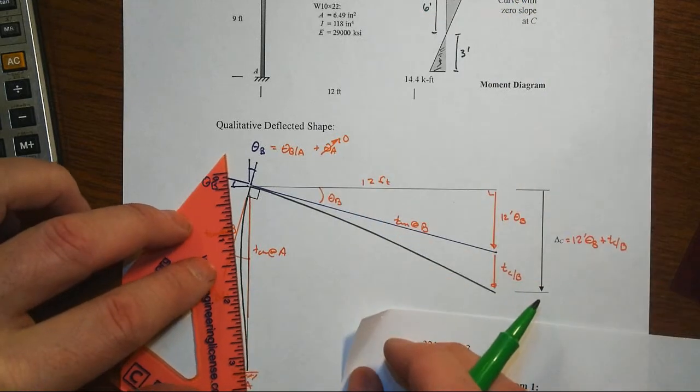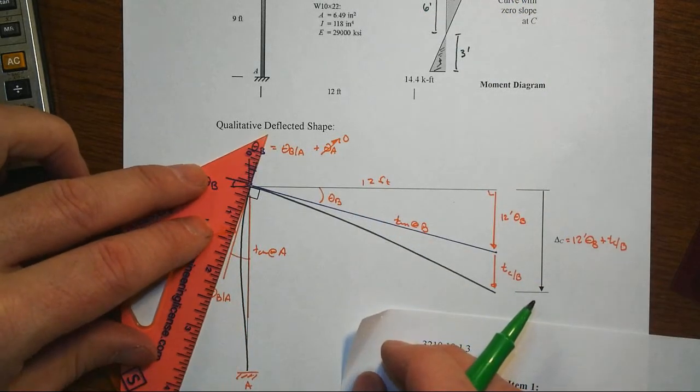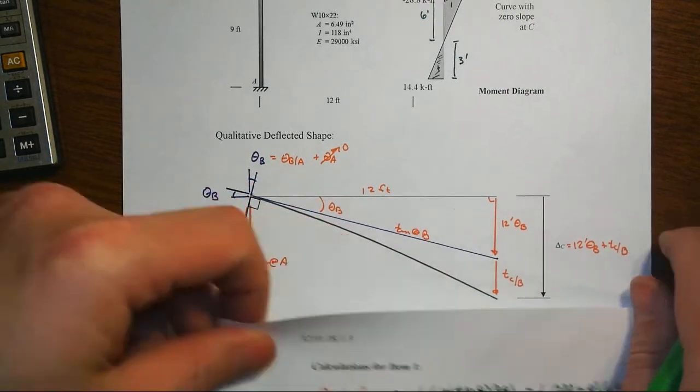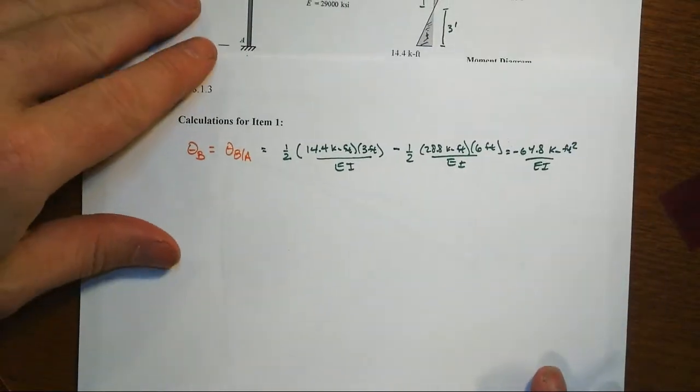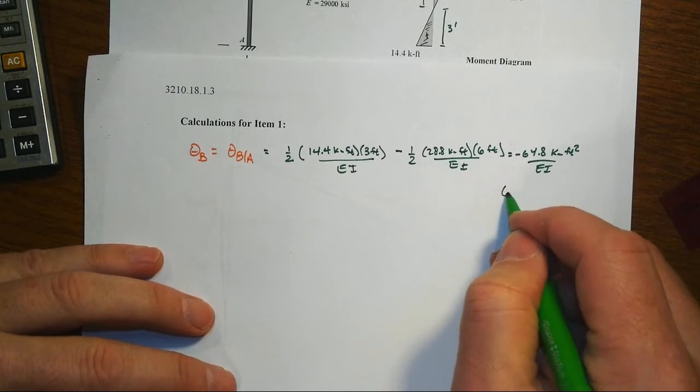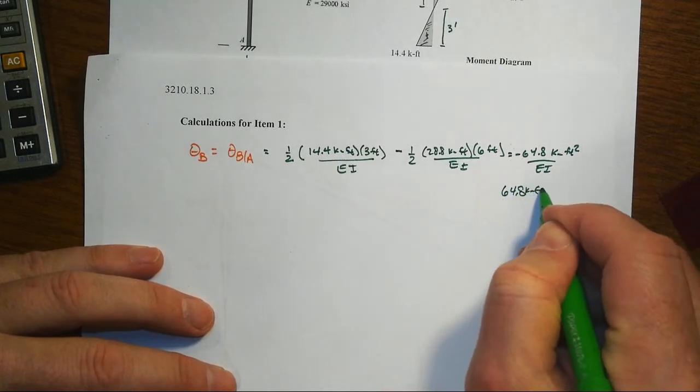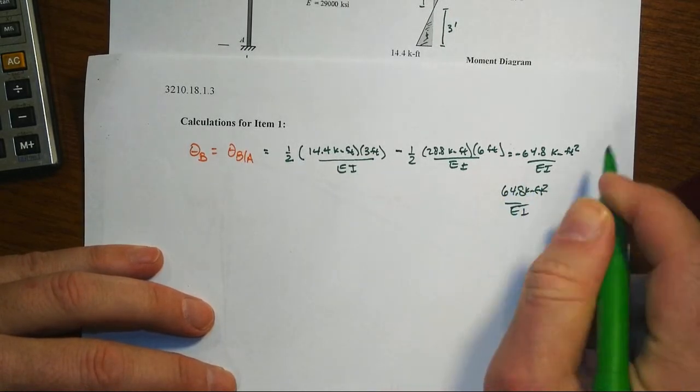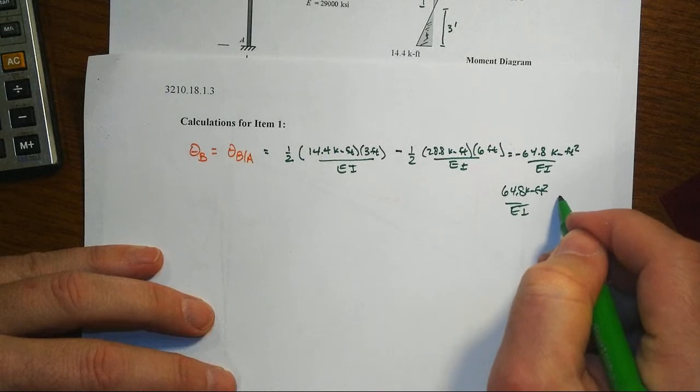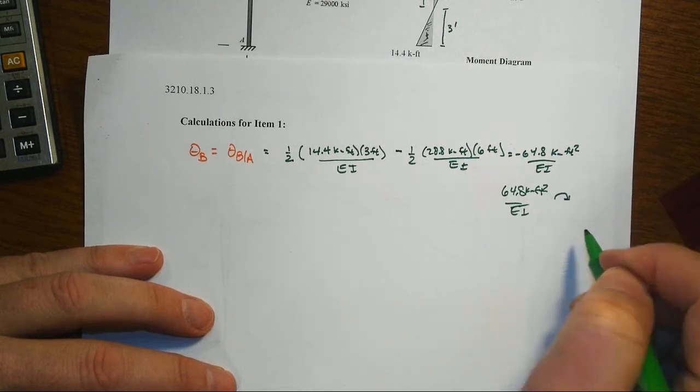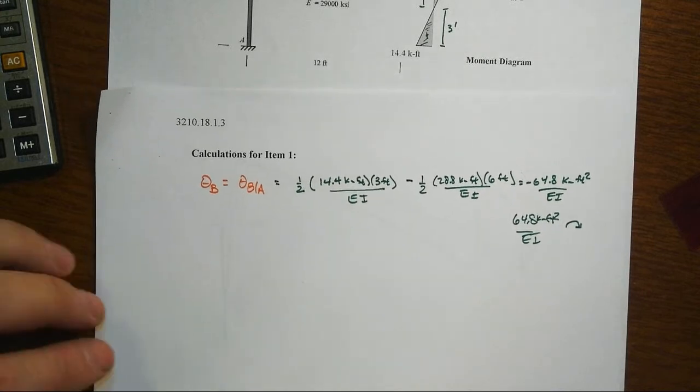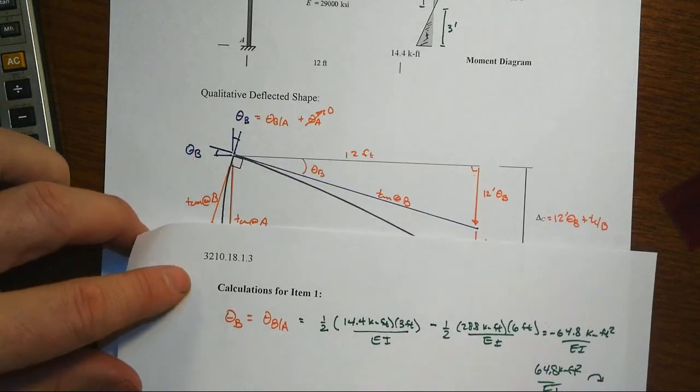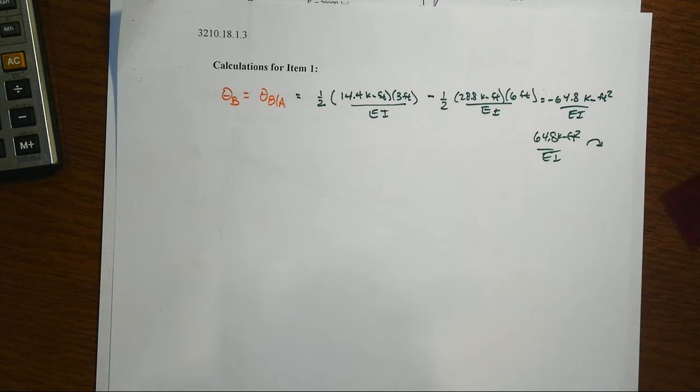and then we're swinging it back the other direction. So that net here is really just telling us that theta B is going in the direction that we had assumed, or 64.8 kip feet squared over EI in the clockwise direction. So that's theta B, then we're going to eventually multiply that by 12 feet, but let's go get the tangential deviation next.